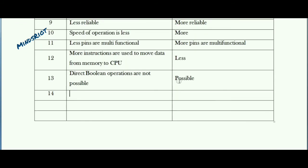Regarding clock frequency or operating frequency: in case of microprocessor it is 3 MHz, and in case of microcontroller it is 12 MHz theoretically, while the practical operating frequency is 11.0592 MHz.